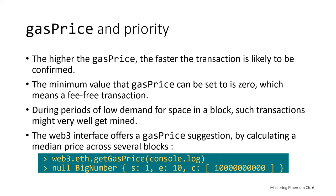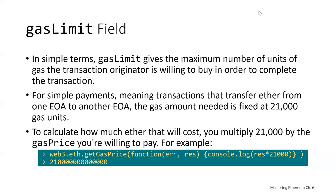The Web3 interface can suggest a gas price by calculating a median price across several blocks, using web3.eth.getGasPrice. The second important gas-related field is gas limit — the maximum number of units of gas the transaction originator is willing to buy to complete the transaction. For simple payments transferring ether between externally owned accounts, the gas amount needed is fixed at 21,000 gas units. To calculate the ether cost, multiply 21,000 by the gas price you're willing to pay.